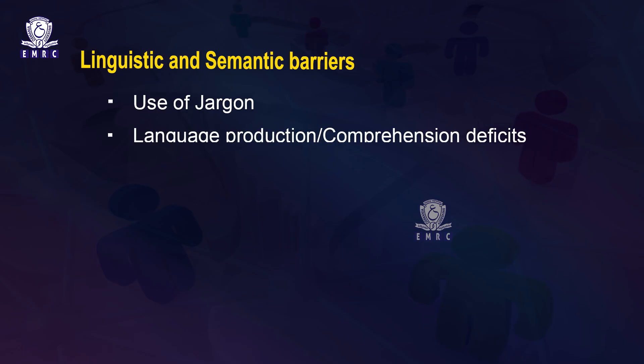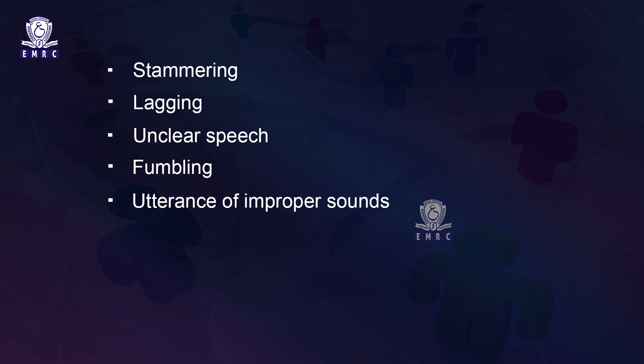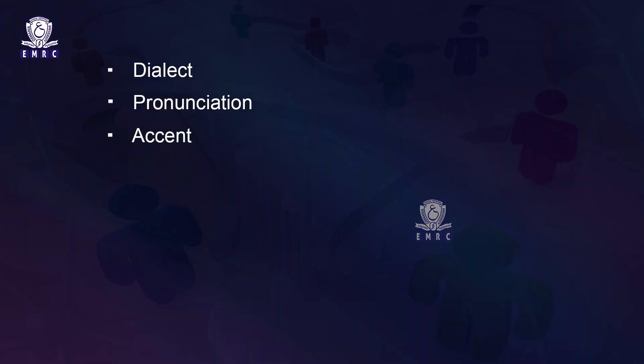Language production or comprehension deficits such as stammering, lagging, unclear speech, fumbling, utterance of improper sounds, or compromised comprehension due to stroke or other health conditions can also create barriers to communication. Language itself can become a barrier where people of different languages attempt to communicate with each other. Dialect, pronunciation, accent, tone, pitch, and prosody can also create barriers to communication concerning language.